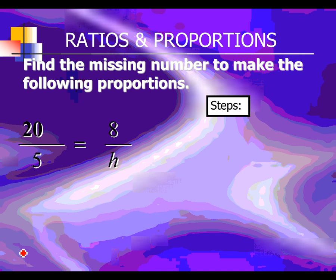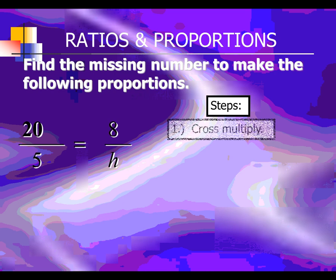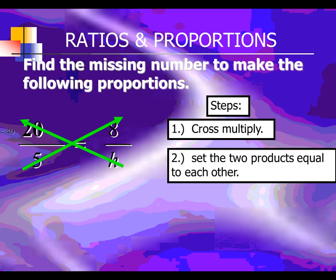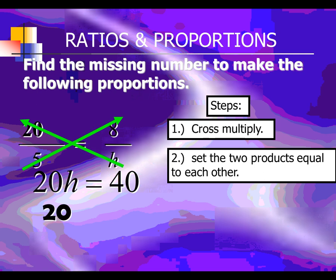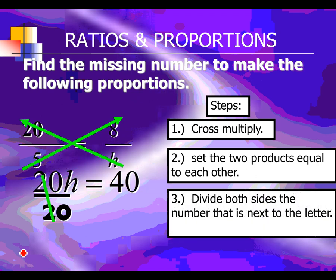The next example is 20 to 5 equals 8 to H. Cross multiply and you get 20H, because 20 times H is 20H, and 5 times 8 is 40. Solve it by using the inverse operation, which is divide by 20. 40 divided by 20 is 2 — very easy. So H equals 2.